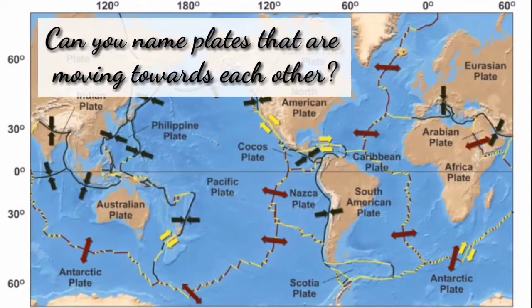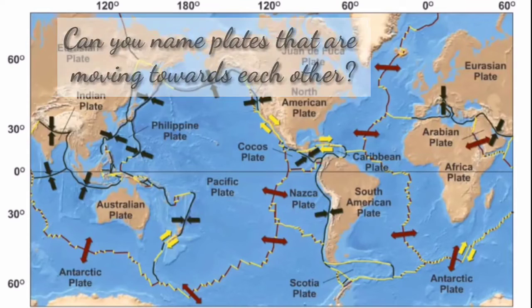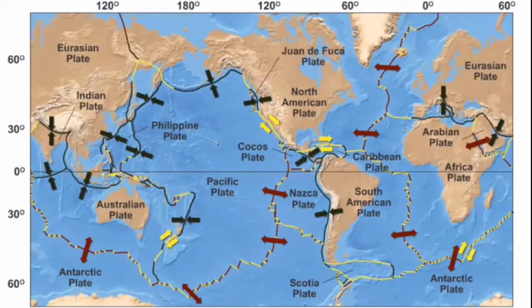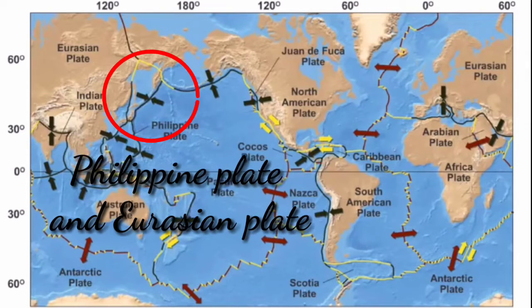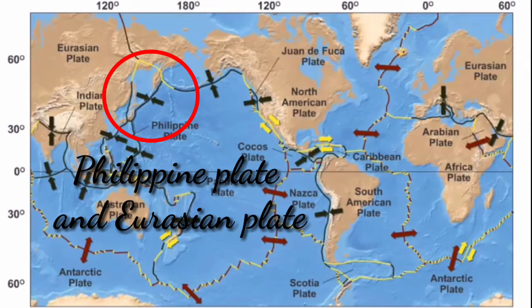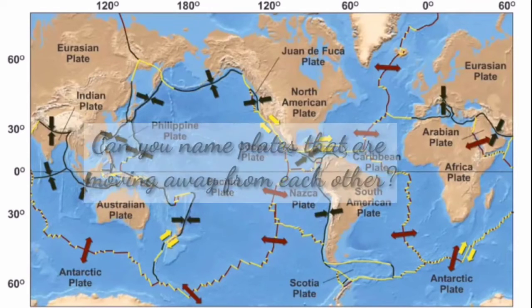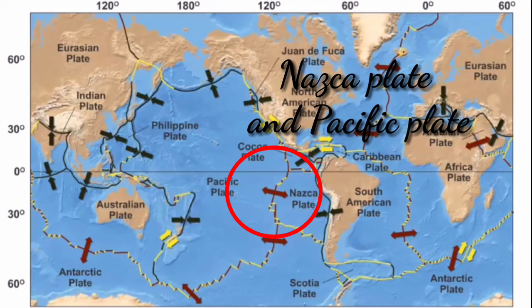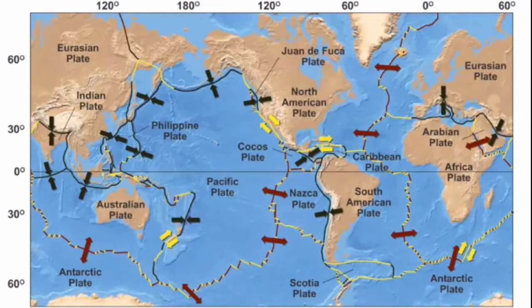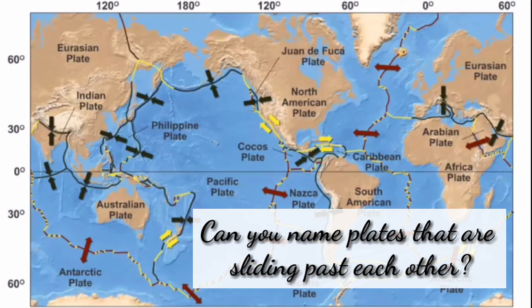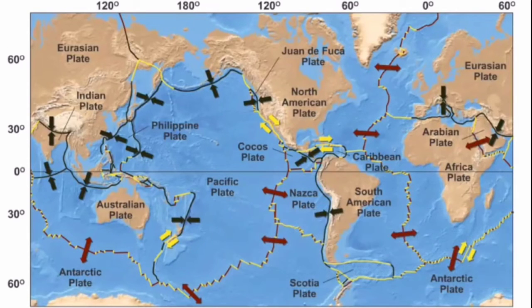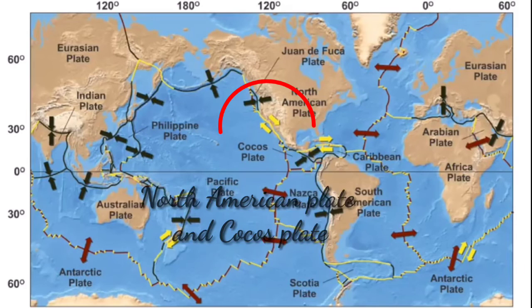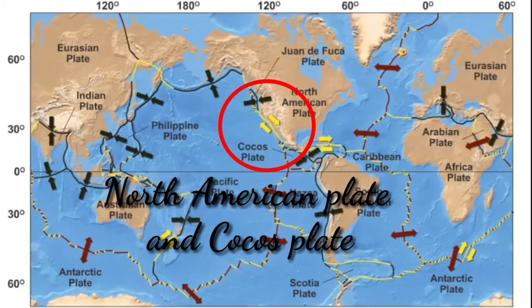Can you name plates that are moving towards each other? One example is the Philippine plate and the Eurasian plate. How about plates that are moving away from each other? One example is the Nazca plate and the Pacific plate. What about plates that are sliding past each other? One example is the North American plate and the Cocos plate.